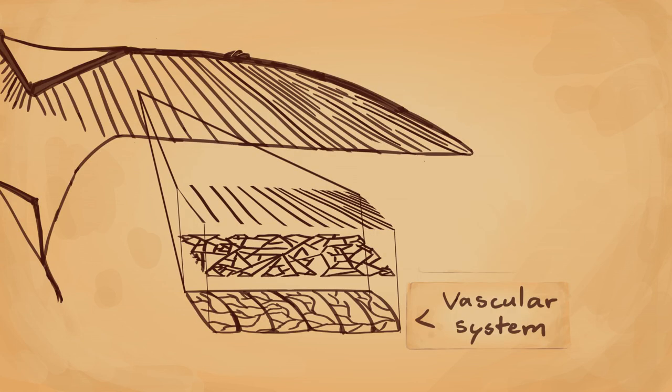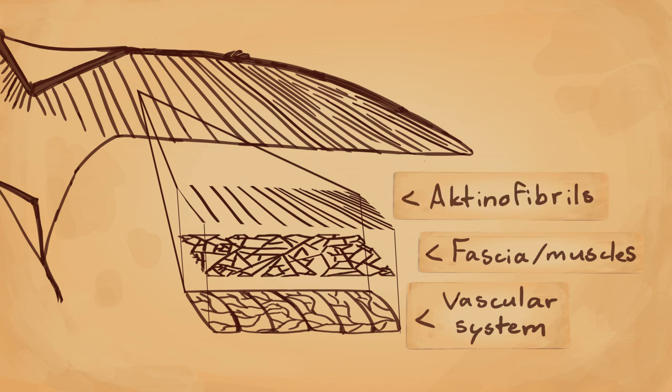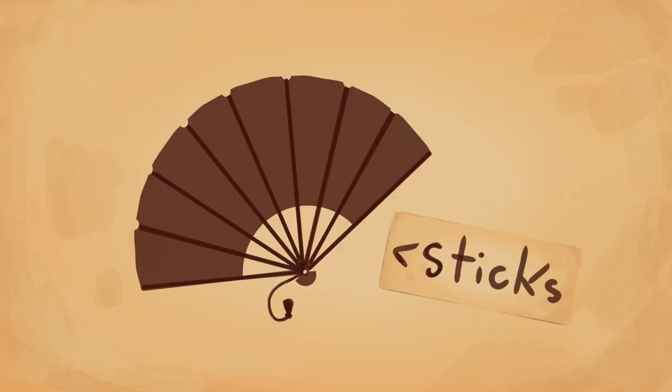The vascular system includes the blood vessels, the fascia is the tissue that holds everything together, and the actinofibrils are the fibers that let the pterosaur fold and stretch its wings, almost like the stakes of a hand fan.